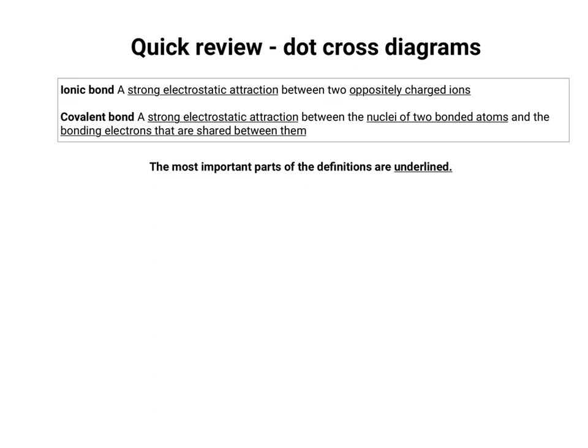The electrostatic attraction is actually going on in both cases, but the electrostatic attraction in ionic bonding is between two oppositely charged ions. We say it's strong because it takes a lot of energy to break these bonds. In covalent bonding, you've still got an electrostatic attraction, but it's the nuclei of two bonded atoms and the bonding electrons that are shared between them. As I go through how to draw the diagrams, I'll make reference to these definitions so you can see the connection between the definition and the diagram.